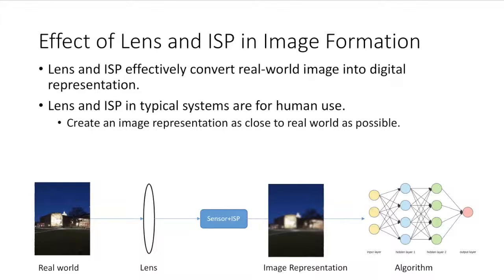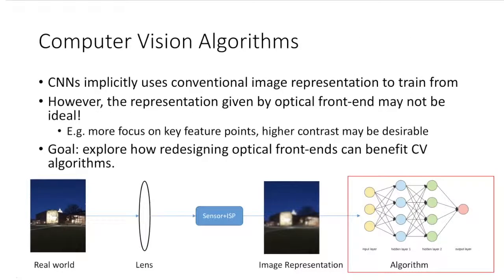Let's discuss the effect that the lens and the ISP have on image formation. The lens and ISP in this system will typically convert real world images into a digital representation. Given that the typical lens and ISP in a camera system are designed for human use, they're typically designed to create an image representation that as closely mirrors the real world as possible. On the other hand, convolutional neural networks will implicitly use this conventional image representation to train from. However, the representation given by the optical front end might not necessarily be ideal.